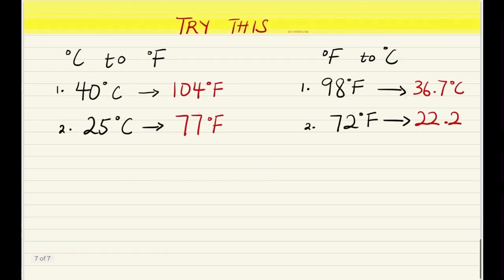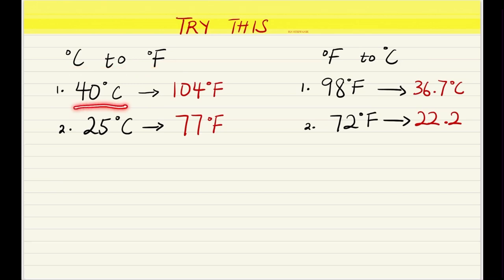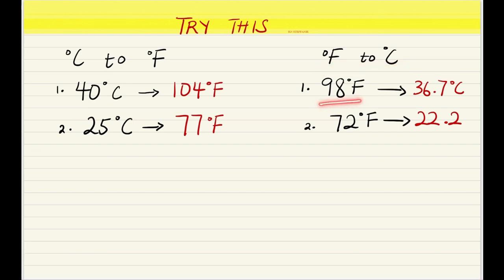I have a few examples for you to try at home. From Celsius to Fahrenheit, convert 40 degrees Celsius and 25 degrees Celsius. From Fahrenheit to Celsius, convert 99.8 degrees Fahrenheit and 72 degrees Fahrenheit. I hope this was helpful — don't forget to check out my other videos on conversions, decimals, fractions, and ratio and proportions.